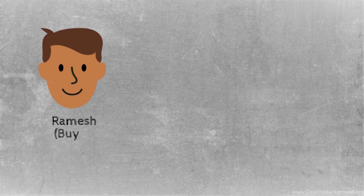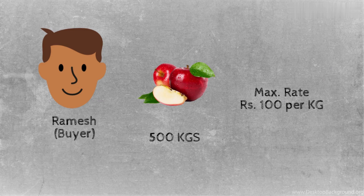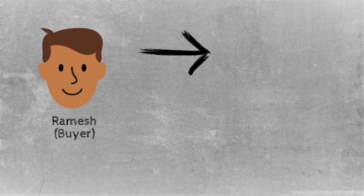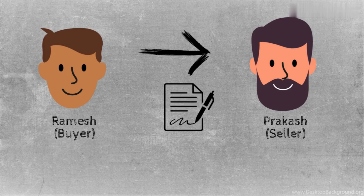Now, let's say Ramesh wants to buy 500 kg of apples and is willing to pay a maximum rate of ₹100 per kg. Due to the good harvest, apples are expected to be sold at ₹80 per kg, but due to the transportation strike, there is a chance that apples may cost upwards of ₹110 per kg. So buyer Ramesh approaches seller Prakash and enters into an agreement wherein Ramesh pays a premium amount of ₹1000 to Prakash on May 1st.